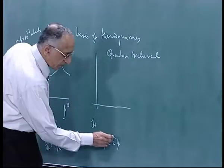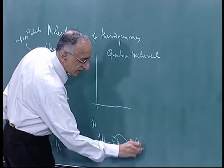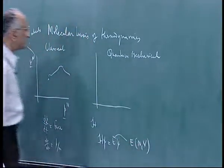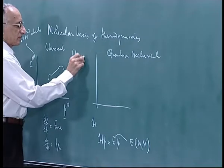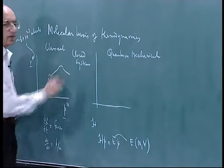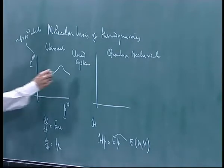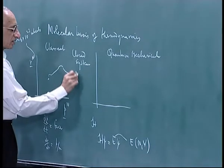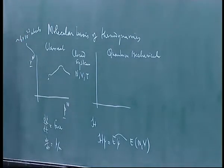The only result we need from quantum mechanics here is that E is a function of N and V. If I have a closed system — a fixed number of molecules N, a volume V, and temperature T — by closed system in molecular thermodynamics I mean a system in which N, V, and T are specified. You can go to mixtures later; let us talk about pure substances.